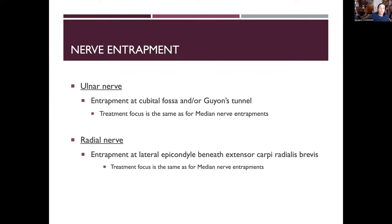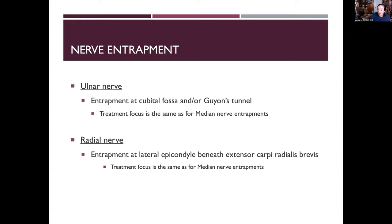The ulnar nerve can be entrapped at the cubital fossa or Guyon's tunnel on the ulnar aspect of the wrist. Treatment is the same as for median nerve — reducing inflammation, nerve gliding, and patient education. Ulnar nerve entrapment at Guyon's tunnel is common in cyclists who compress the ulnar wrist on handlebars in wrist extension. The radial nerve is most commonly entrapped at the lateral epicondyle beneath extensor carpi radialis brevis, though this is less common clinically.